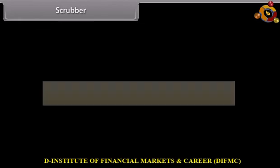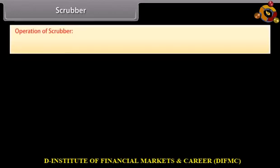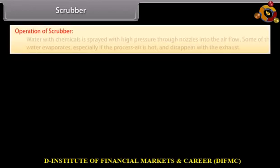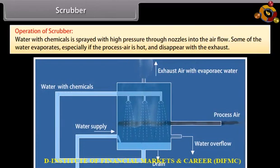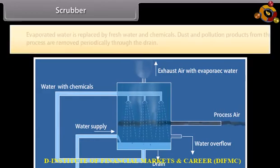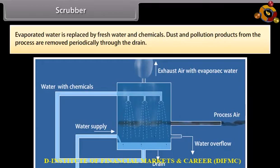Scrubber. A scrubber is an apparatus used to remove impurities from gas. Operation of scrubber: water with chemicals is sprayed at high pressure through nozzles into the air flow. Some of the water evaporates, especially if the process air is hot, and disappears with the exhaust. Evaporated water is replaced by fresh water and chemicals. Dust and pollution products from the process are removed periodically through the drain.